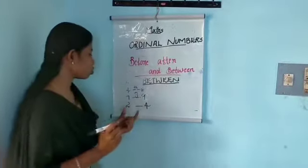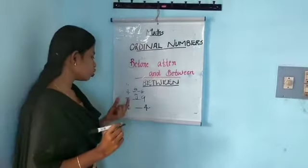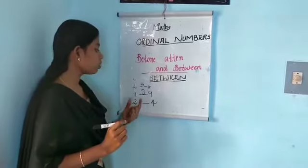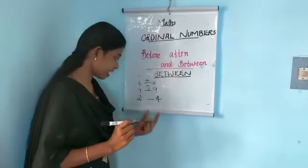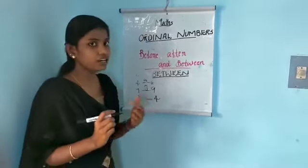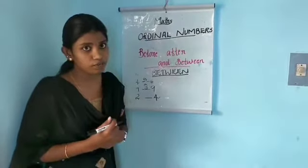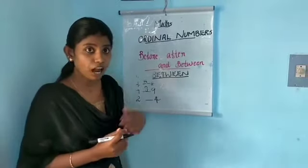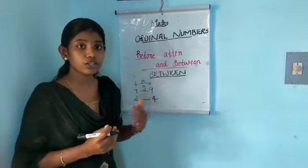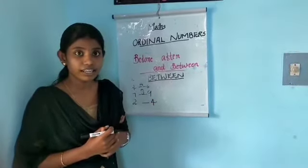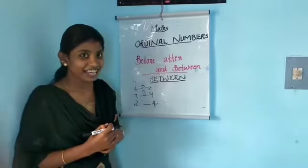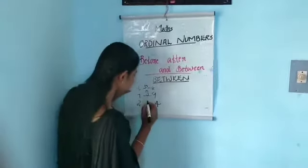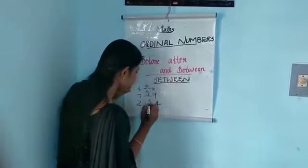Last 'between' example: two, a blank, and four. Which number is between two and four — after two and before four? The answer is three. Very good, we did it!